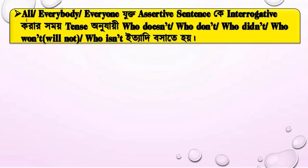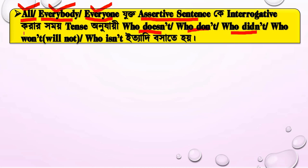All sentences are covered. There is an important printer rule. The words 'all,' 'everybody,' and 'everyone' are very important. When you want to change a sentence with these words into interrogative, for the words 'all,' 'everybody,' and 'everyone,' you should use 'who doesn't' or 'who didn't' at the beginning.